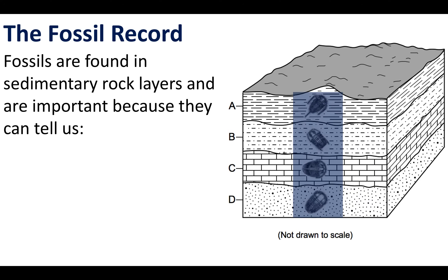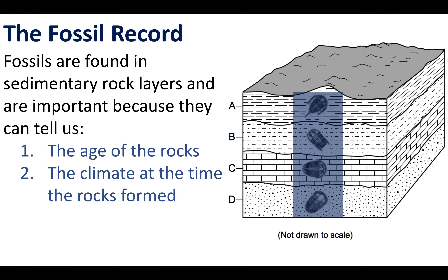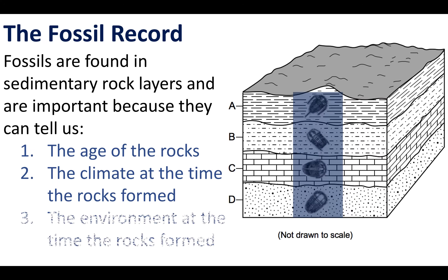This is really important to us as scientists because these fossils and sedimentary rock layers can tell us three different things. The first is that they can tell us the age of the rocks. The second thing is fossils can help us determine the climate that existed at the time the rocks formed. And also these fossils can tell us about the environment that existed at the time that the rocks formed.